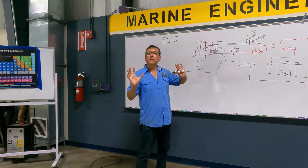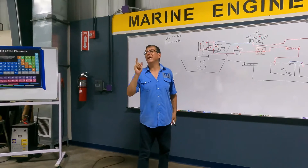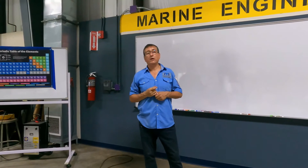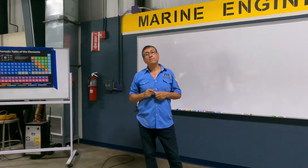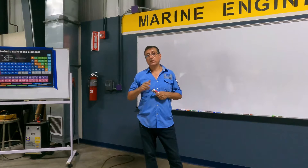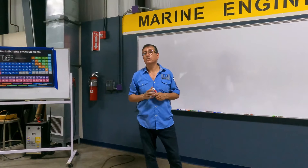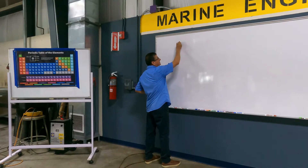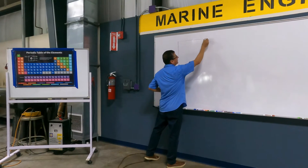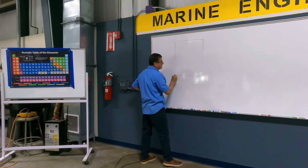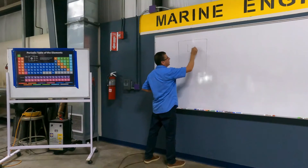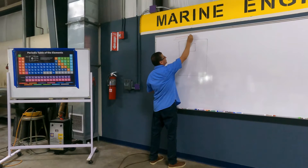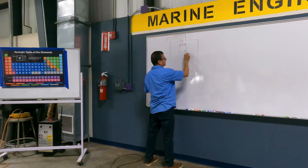Now I am going to do the drawing for the same bow thruster with AC motor. When I have a bow thruster with AC motor, I am talking about a big boat — more than a hundred feet. In that case, I am talking about a boat with two phases or three phases in the AC panel. Suppose that is a three-phase boat with three phases on the breaker.